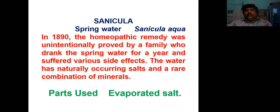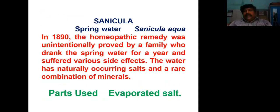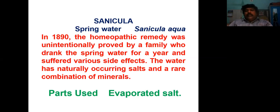The common name is spring water — Sanicula aqua — and the part used is the evaporated salt. How Sanicula came into medicine: in 1890, it was unintentionally proved, similar to Blatta orientalis. Once, a family was constantly drinking the water of this mineral spring and they developed lots of symptoms from it, which gave a hint. It was simultaneously proved and later added to the Materia Medica.